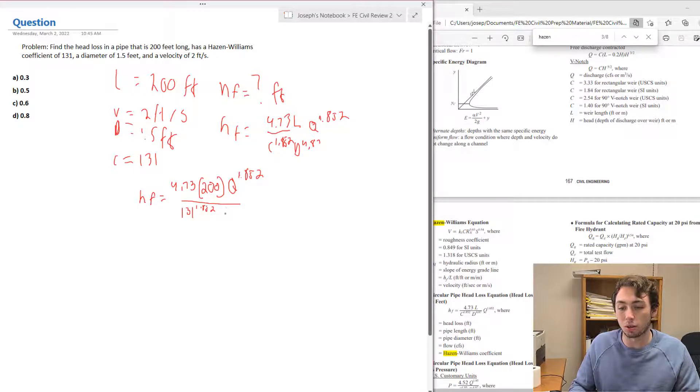...and then the diameter of the pipe was 1.5 feet, so we got 1.5 raised to the 4.87. So how are we going to find Q? Well, if we remember from our continuity equations, Q equals V times A.